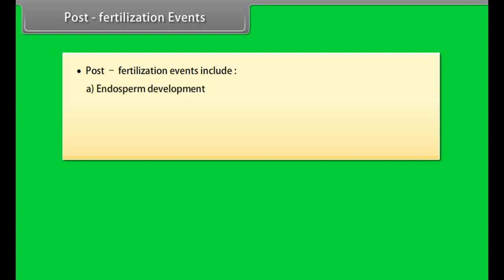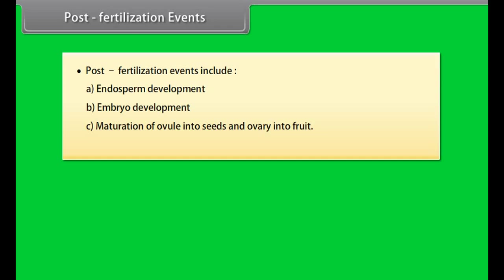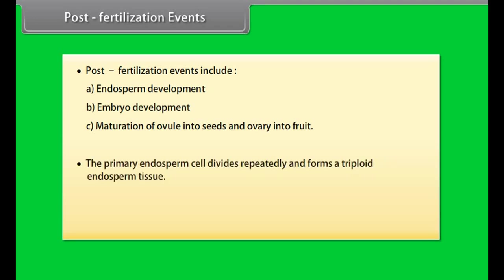Post-fertilization events include: endosperm development, embryo development, maturation of ovule into seeds, and ovary into fruit. The primary endosperm cell divides repeatedly and forms a triploid endosperm tissue. The cells of this tissue are filled with reserved food materials and are used for the nutrition of the developing embryo.